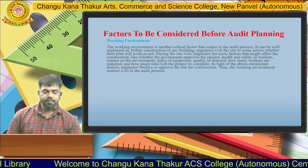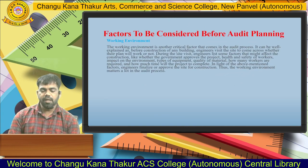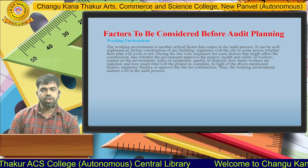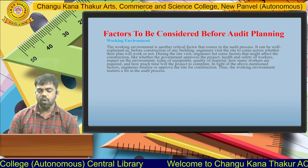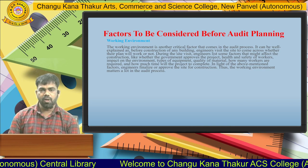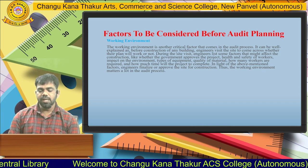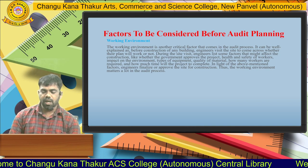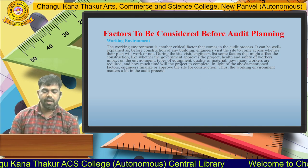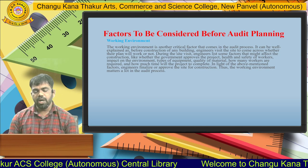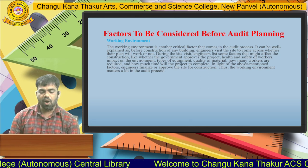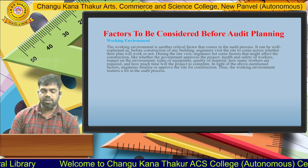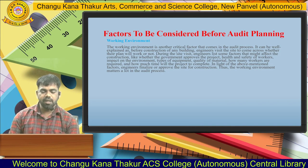The third factor is working environment. The working environment is a critical factor in the audit process. It can be explained with an analogy: before construction of any building, engineers visit the site to check whether their plan will work. During the site visit they list factors such as government approvals, health and safety of workers, environmental impact, equipment required, quality of material, number of workers needed, and project timeline. Similarly, the working environment matters greatly in the audit process.